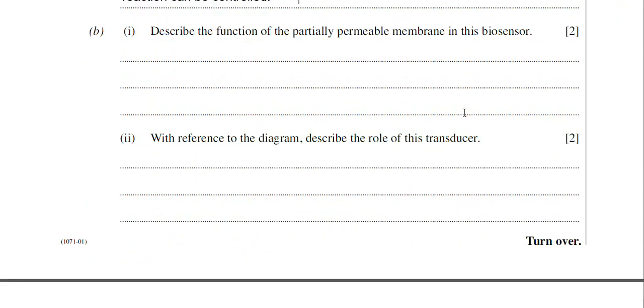If we're moving on then, part B1, describe the function of the partially permeable membrane in this biosensor. This question always comes up when there's a question on biosensors. It's always worth two marks, so they're after two key features of the partially permeable membrane. And it's straightforward enough. It's there to allow, in this instance, the urea to pass through the partially permeable membrane. The urea is the substrate of the urease enzyme. So that will get you one mark.